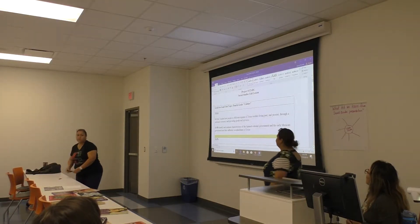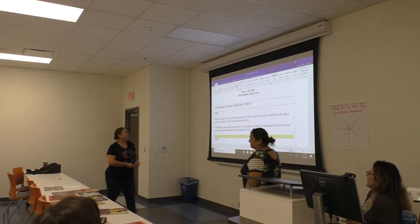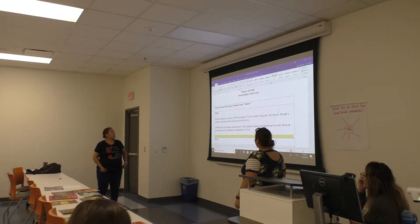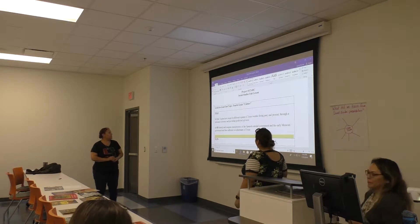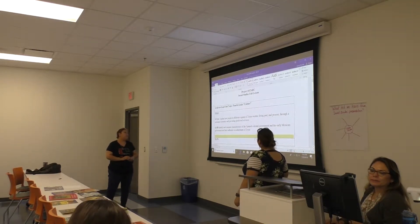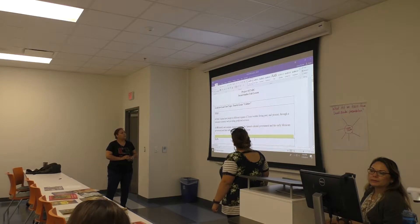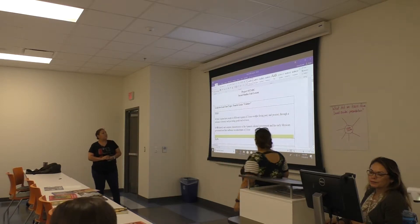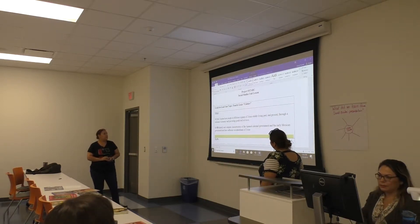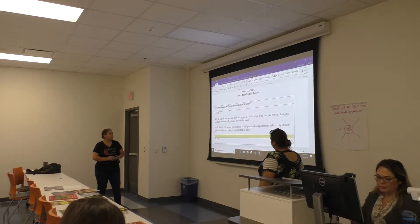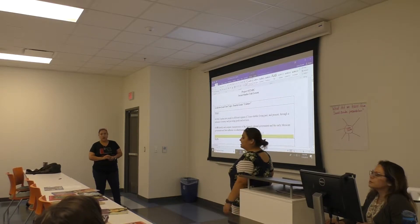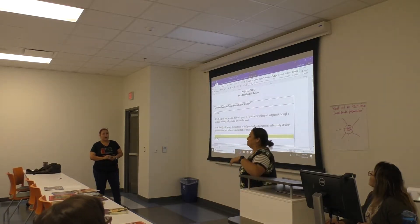This is a 4th grade lesson aligned to working culture standards 4.2 AC and 4.14 B. The objective is to explain how people in different regions of Texas live, past and present, through the lens of economy and providing services. It also compares characters in the Spanish colonial government, New York and Mexican government influence, and their chance in Texas — researching where students come from, what their family has done, and exactly what cities they came from.